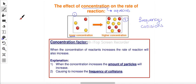As a summary for the concentration factor: when the concentration of reactants increases, the rate of chemical reaction will also increase. For the explanation, use two essential points. First, when concentration increases, the amount of particles — meaning moles — will increase, since moles are directly affected by concentration. Second, the frequency of collisions increases. So whenever concentration increases, the rate of chemical reaction will increase as well.